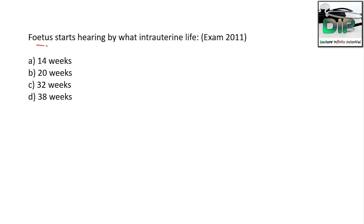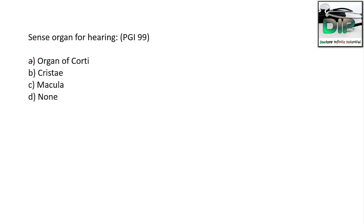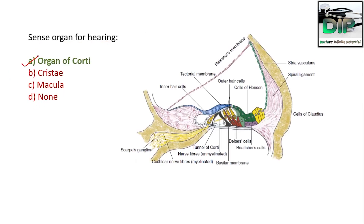Next question. The fetus starts hearing by what intrauterine age? Option A: 14 weeks. Option B: 20 weeks. Option C: 32 weeks. Option D: 38 weeks. The correct answer is Option B, 20 weeks. Next question. The sense organ for hearing is: Option A organ of Corti, Option B crista, Option C macula. The correct answer is organ of Corti.